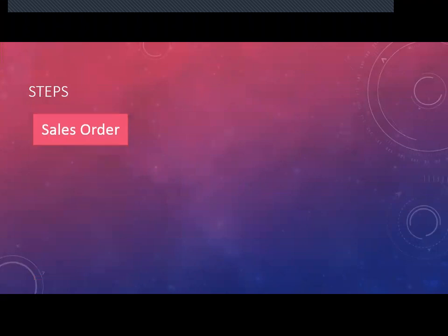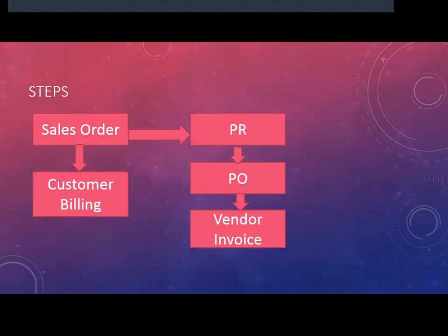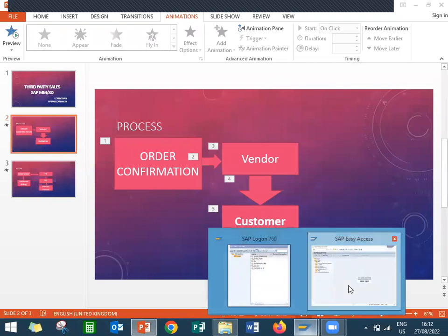The steps are: I am going to create a sales order. Upon creation of the sales order, in the background a purchase requisition will be created. Once the purchase requisition is created, we create the purchase order and we do vendor invoice. There is no goods receipt or goods issue — no goods movement happens here in third party. So automatically we put the billing to the customer. The material will be sent from the vendor to the customer. Vendor will put the billing to our company, and the company in turn will put the billing to the customer. I will show that in the live system.